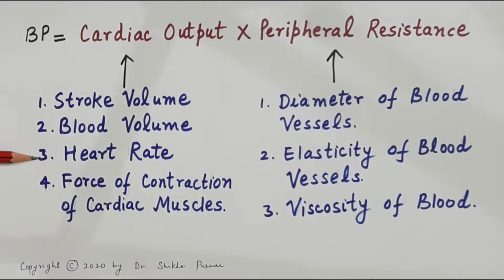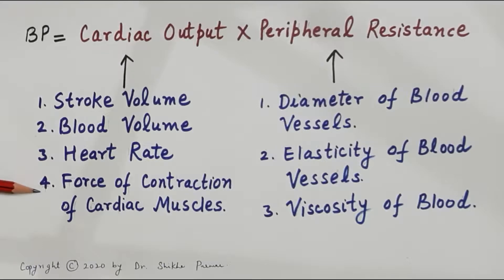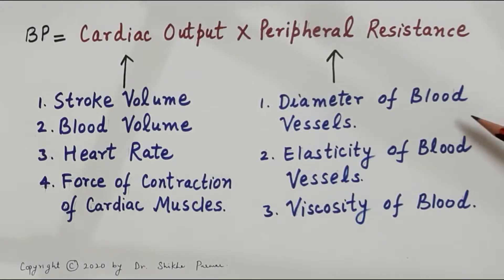The third factor is heart rate — higher the heart rate, more will be the cardiac output. The force of contraction of cardiac muscles also matters: higher the force of contraction, more will be the stroke volume and more will be the cardiac output. Peripheral resistance depends upon the diameter of blood vessels.